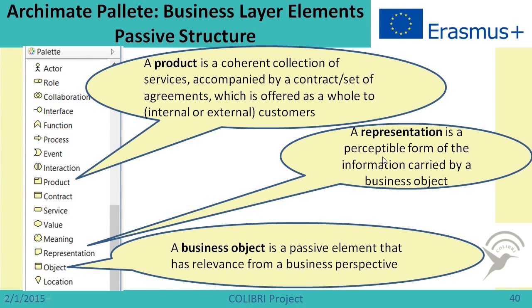There is also representation, which shows a perceptible form of the information carried by a business object. And there is a business object, which is a passive element that has relevance from the point of view of the business — most often it is data. There can be different representations of the data. I didn't name all elements here, just those most useful for our exercise. Have you succeeded in finding all elements of the business level?